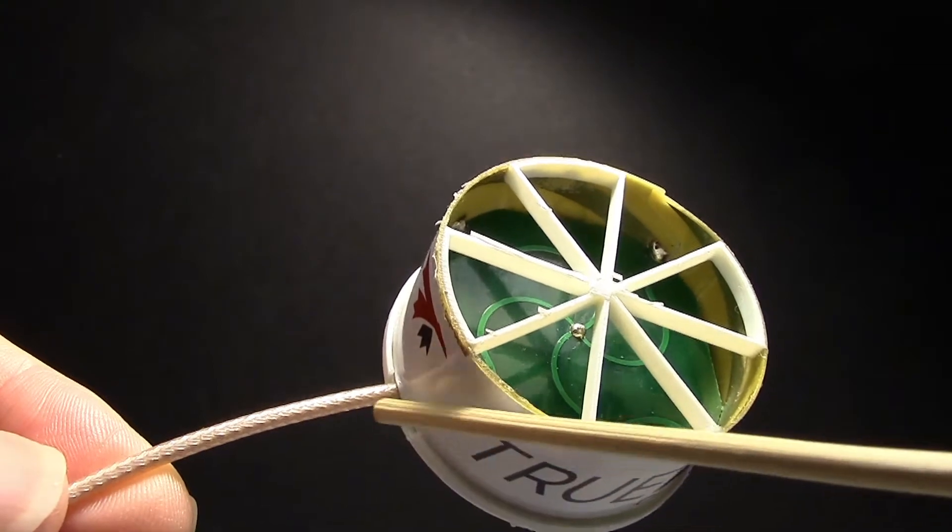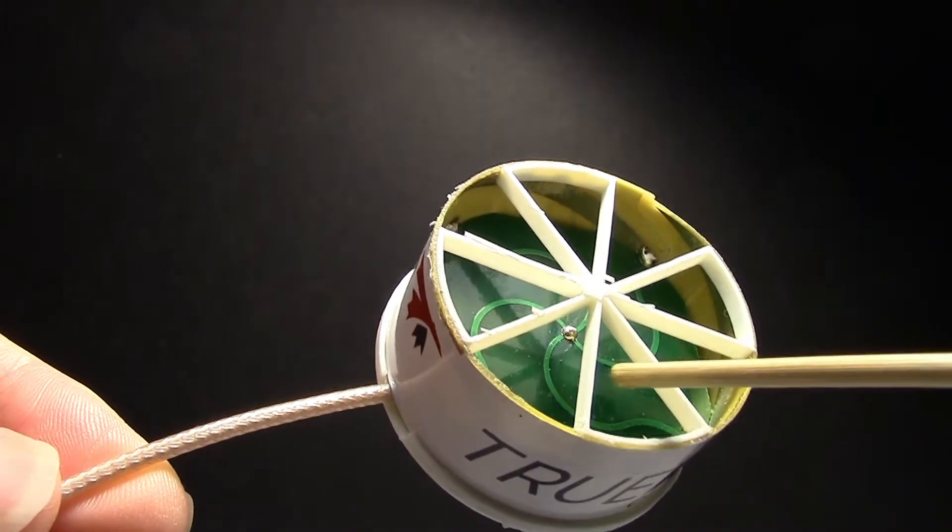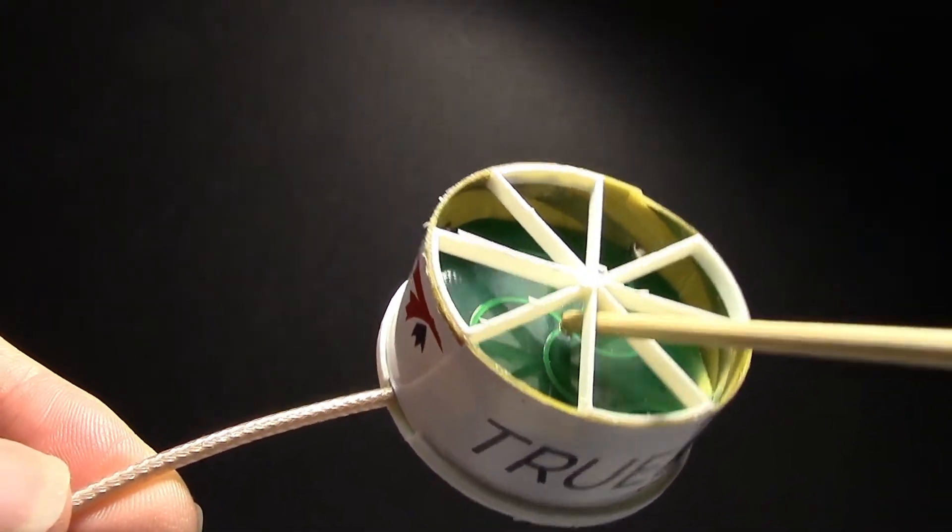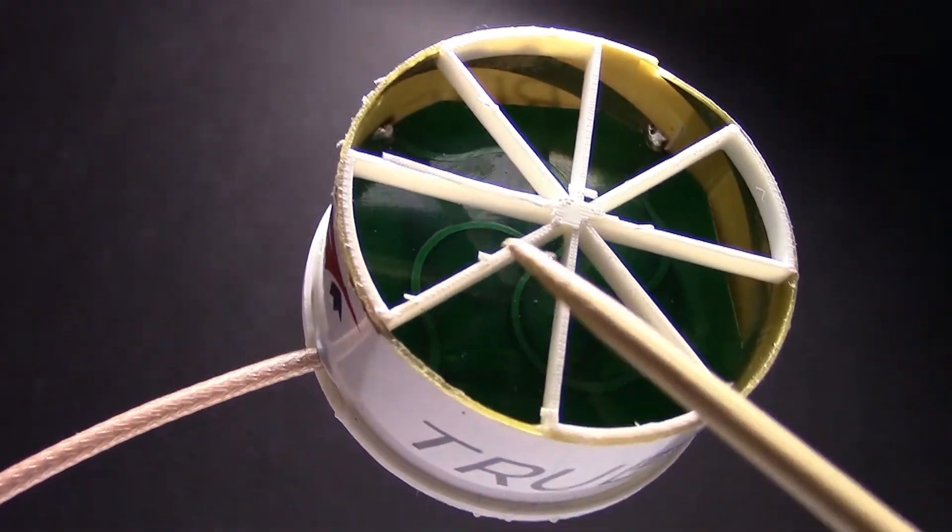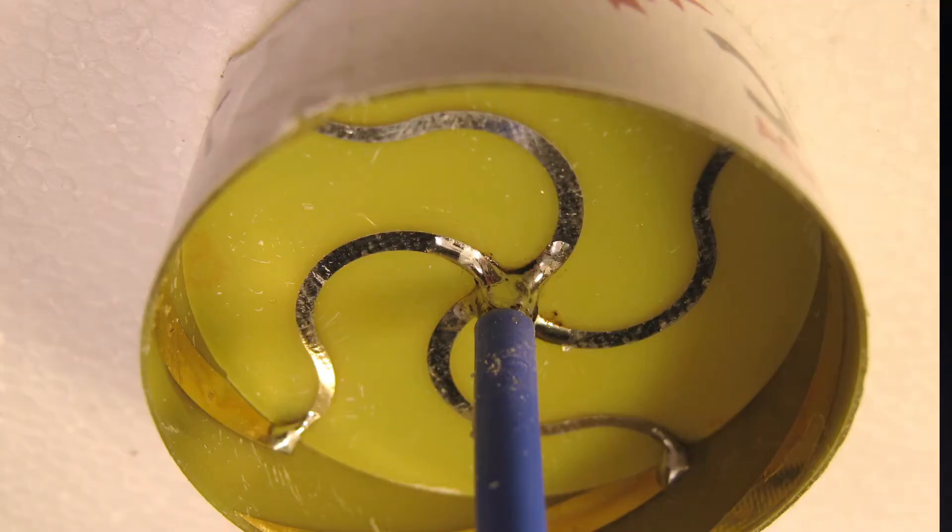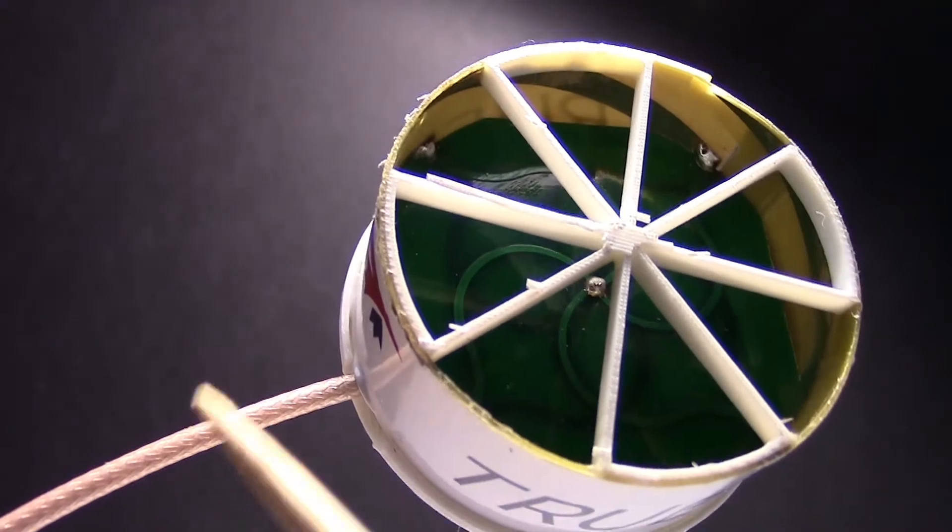The center wire from the SMA cable that feeds the antenna solders right in the middle or right here. The shield of the SMA cable connects to the center of the pattern on the bottom of the circuit board. So the center conductor goes to the top and the shield goes to the bottom.